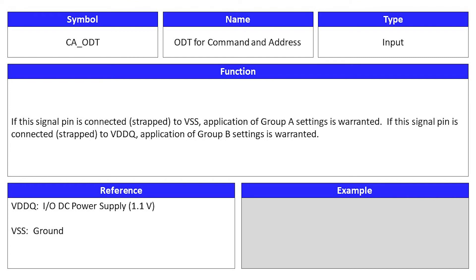ODT for command and address is an input signal. Its symbol is CA-ODT. If this signal pin is connected, or strapped, to VSS, application of group A settings is warranted. If the signal pin is connected, or strapped, to VDDQ, application of group B settings is warranted.